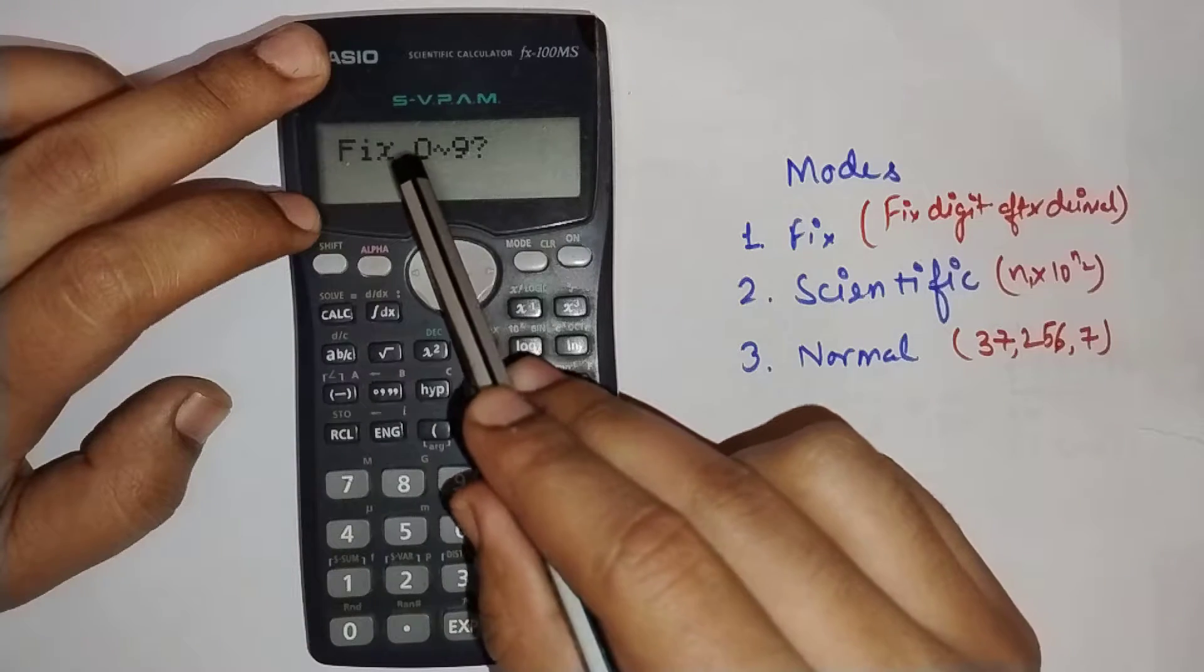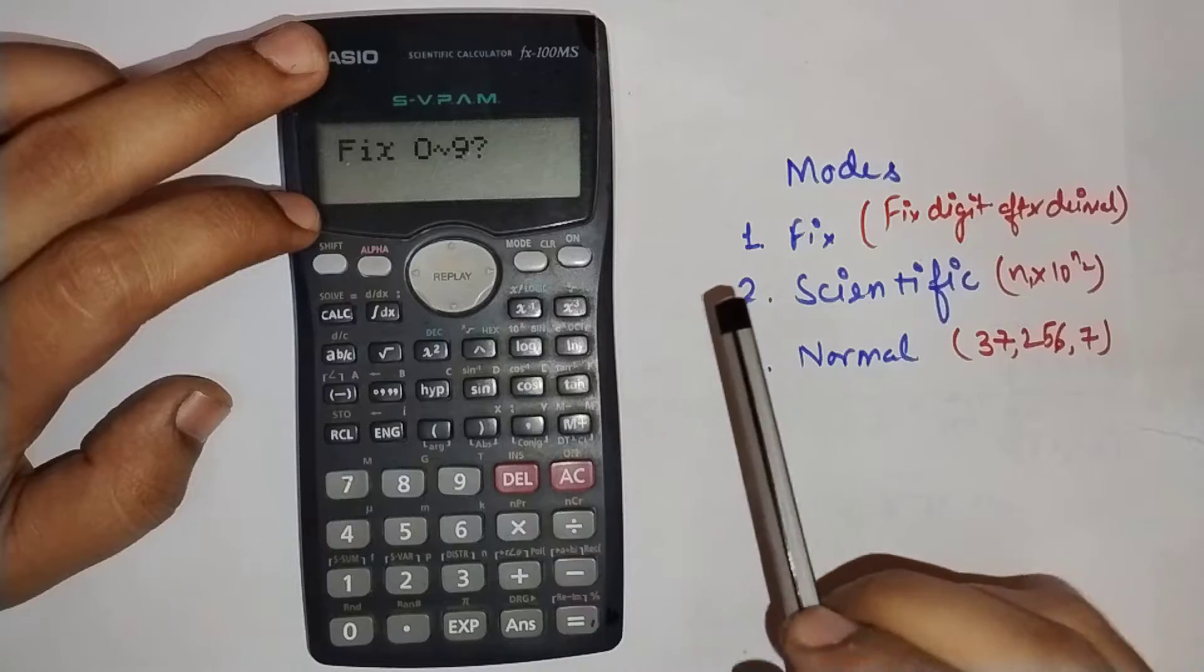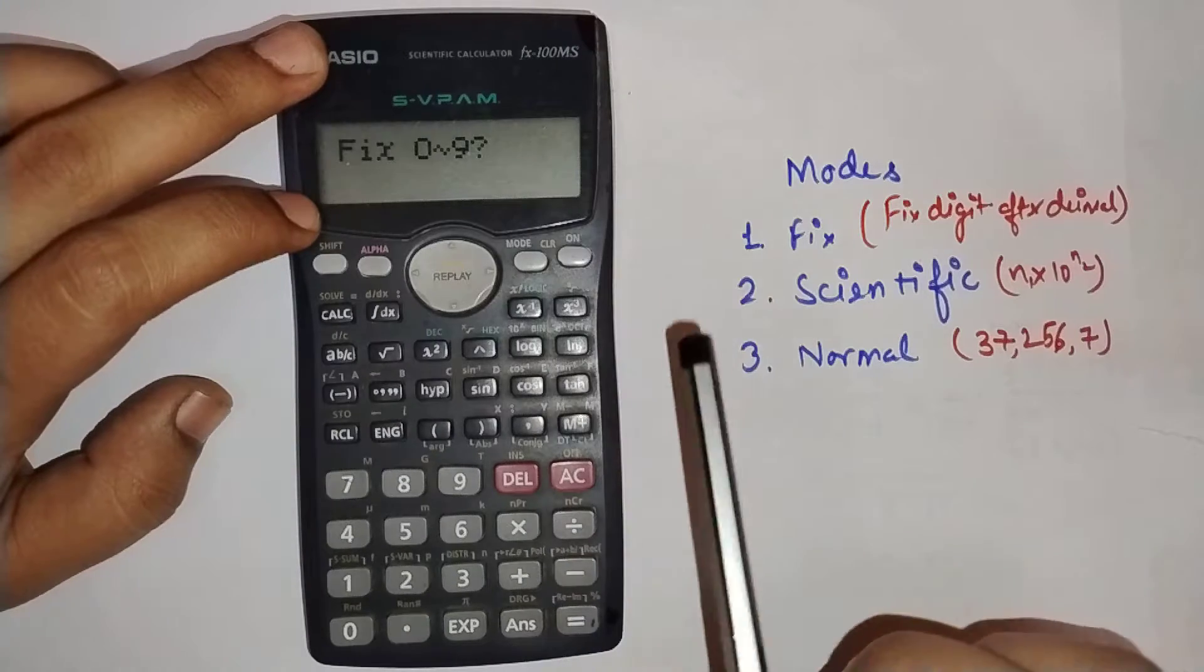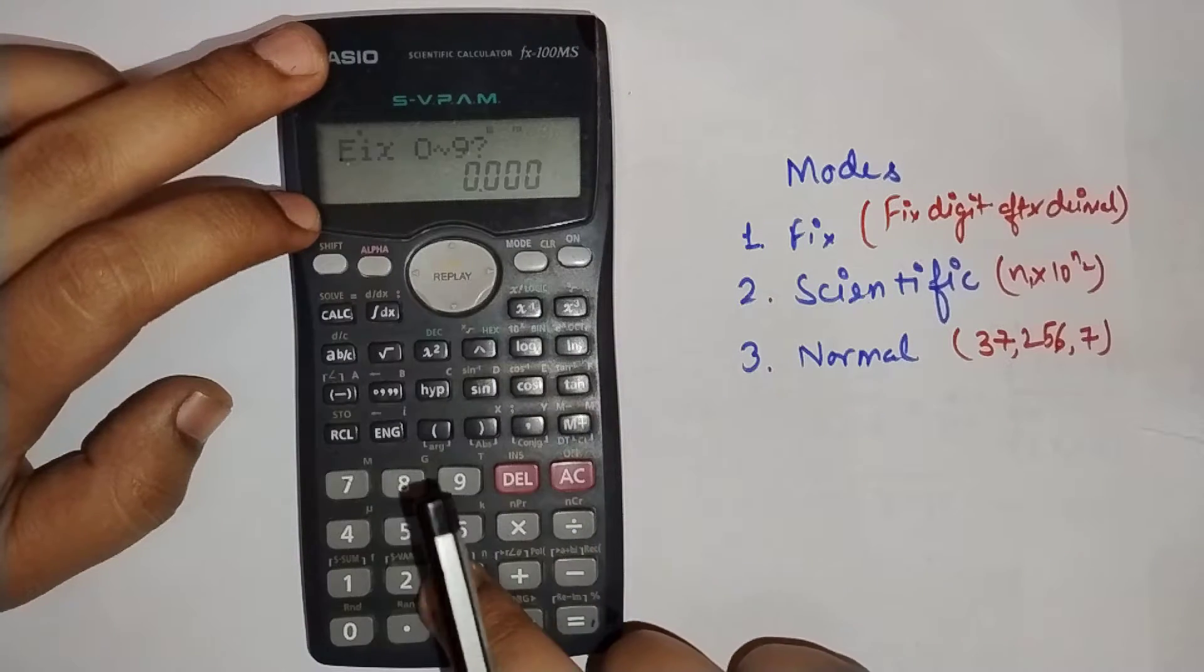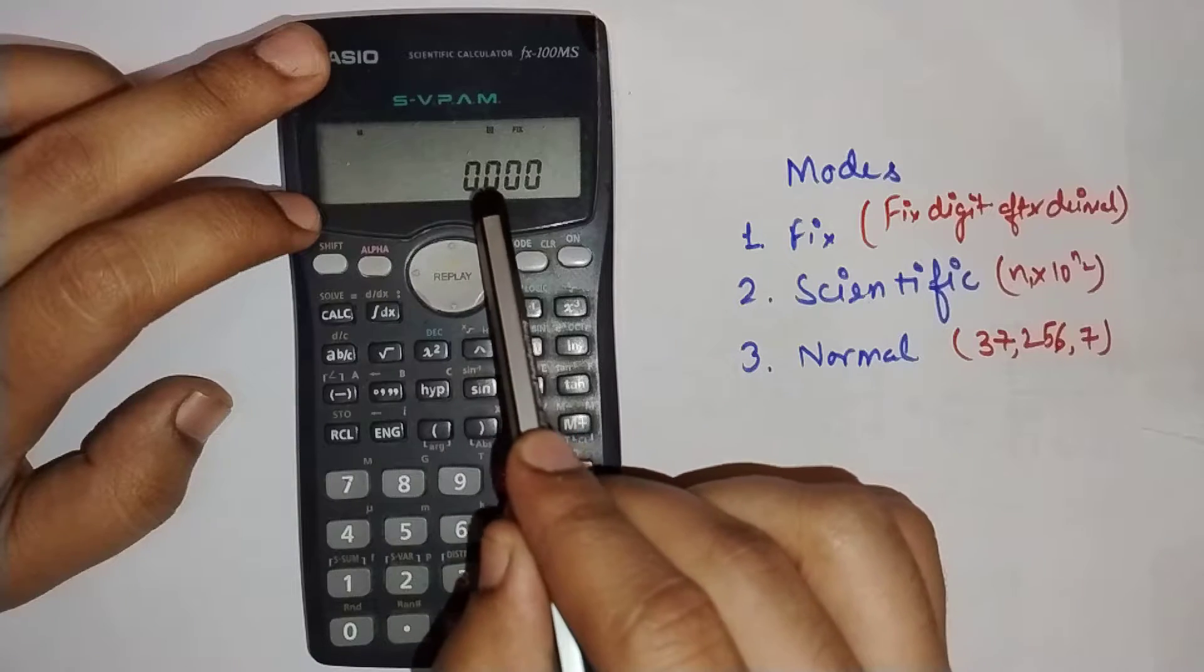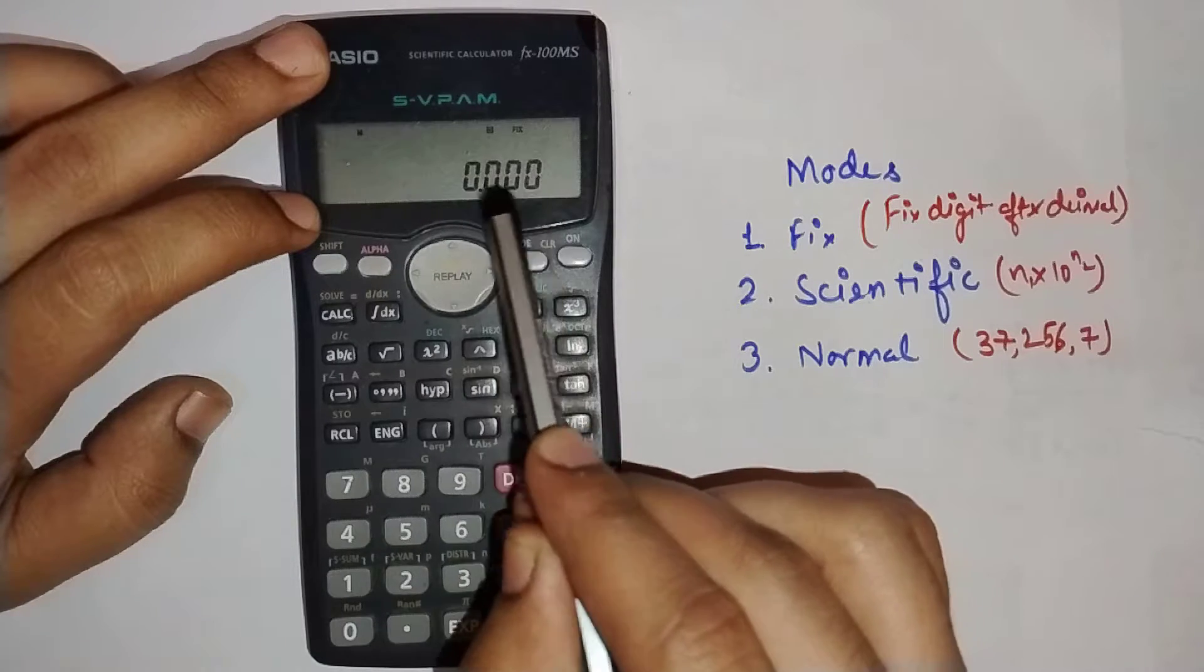If you press fix, it will show 0 to 9, asking how many digits you want after the decimal. If I press 3, it will give me three digits after the decimal.